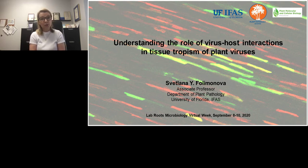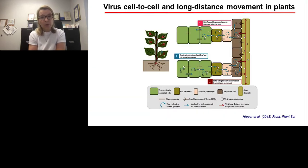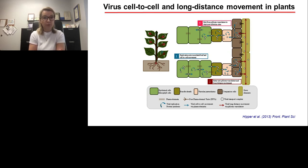Today I would like to focus on the role of virus-host interactions in tissue tropism of plant viruses. To establish infection, plant viruses need to effectively invade and spread within their hosts. Most viruses are typically introduced into a plant by epidermal or mesophyll cells in which they disassemble, replicate, translate their proteins, and assemble new virions. Viruses then move cell to cell until they reach the phloem, and the phloem serves as the highway by which plant viruses spread throughout their hosts.